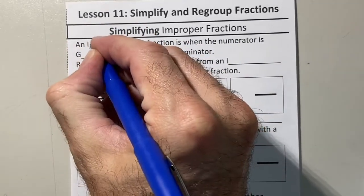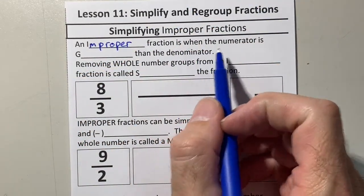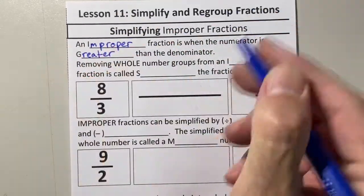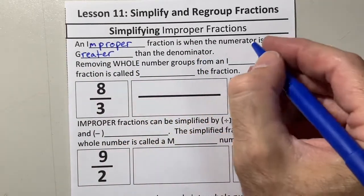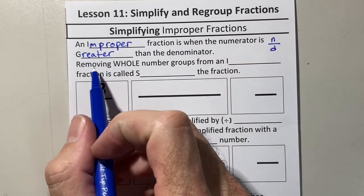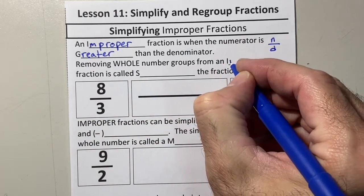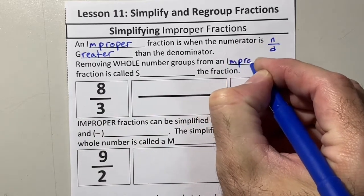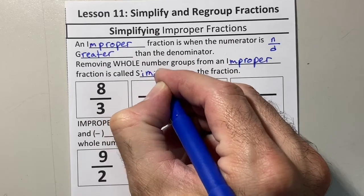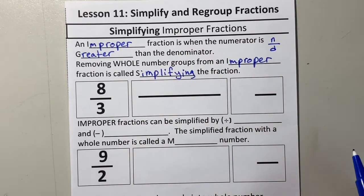An improper fraction is when you have a fraction where the numerator is greater than the denominator. What we're going to do is remove whole number groups from the numerator of the improper fraction, and this process we're going to call simplifying the fraction.